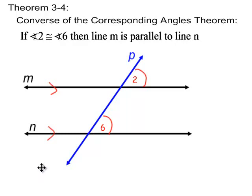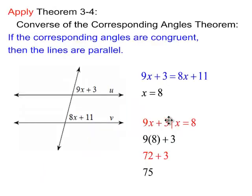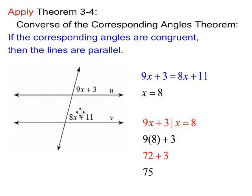Now let's apply this idea. If we're given the expression 9x plus 3 representing this angle here, and 8x plus 11 representing this angle here, these are corresponding angles. So for line u to be parallel to v, these two expressions have to be equal to each other — these two angles have to be congruent.